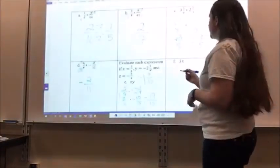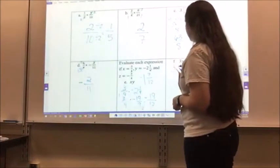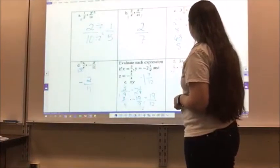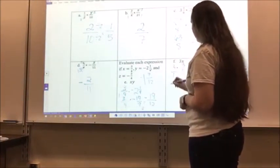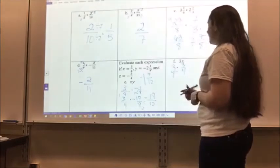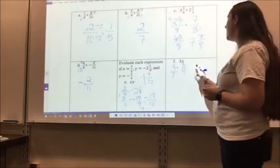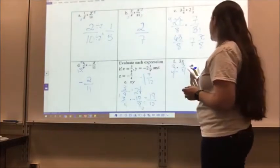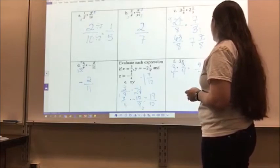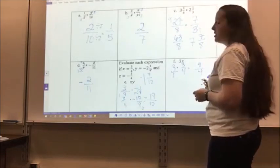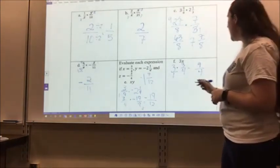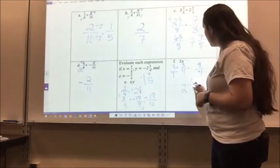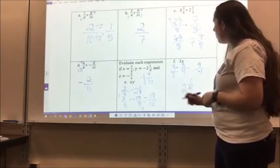For f, I have 3x, so that's 3 times 3/4. I can write this as 3/1. There's nothing I can simplify: 3 times 3 is 9, and 1 times 4 is 4. Changing to a mixed number: 4 goes into 9 twice with 1 left over, so 2 and 1/4.